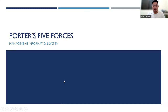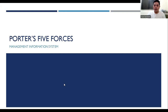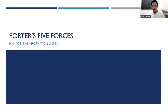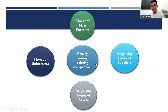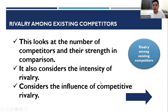When we talk about Porter's Five Forces model, we focus on the internal environment, while the external environment includes the competitors we have externally. The first factor that affects a company is what we call rivalry — rivalry among existing competitors. This looks at the number of competitors and their strength in comparison, and also considers the intensity of rivalry.